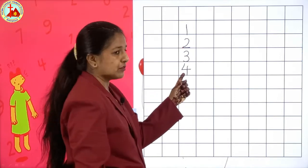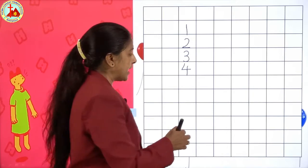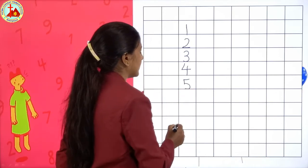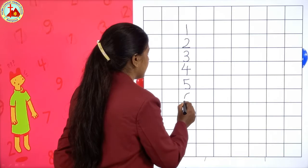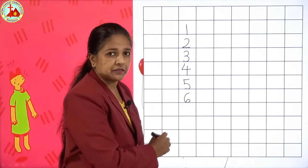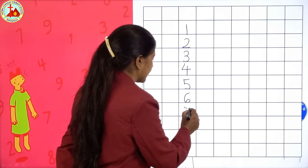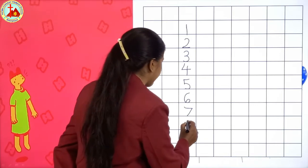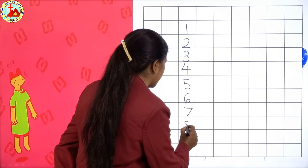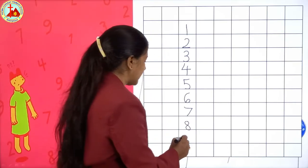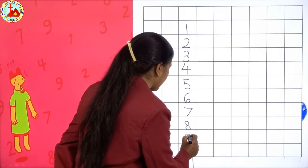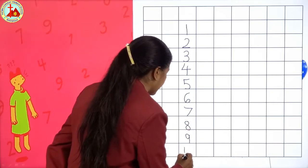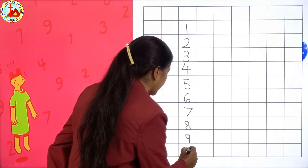You have to touch the bottom line and write all the numbers: 1, 2, 3, 4 and after 4, 5. Then 6, after 6, 7. After 7, 8. After 8, 9. And after 9, 1-0, 10.